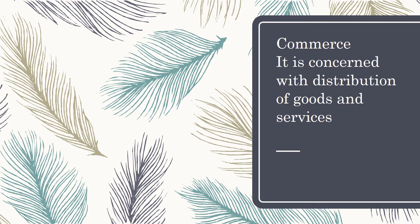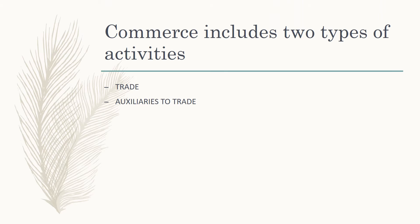After goods are manufactured, the work of commerce is to distribute the goods and services. Commerce includes two types of activities — mainly trade and auxiliaries to trade. Trade means buying and selling of goods and services.